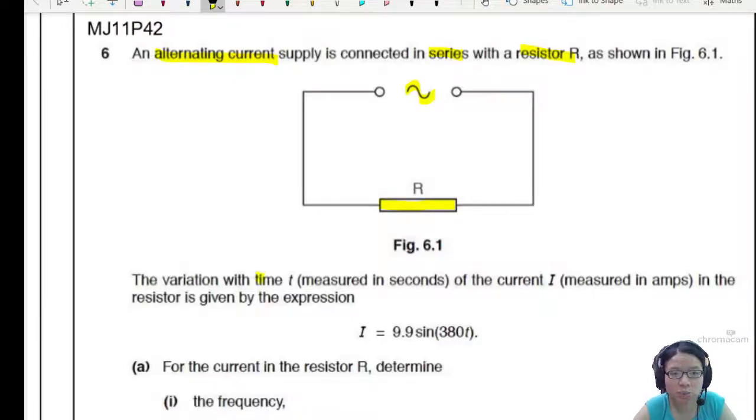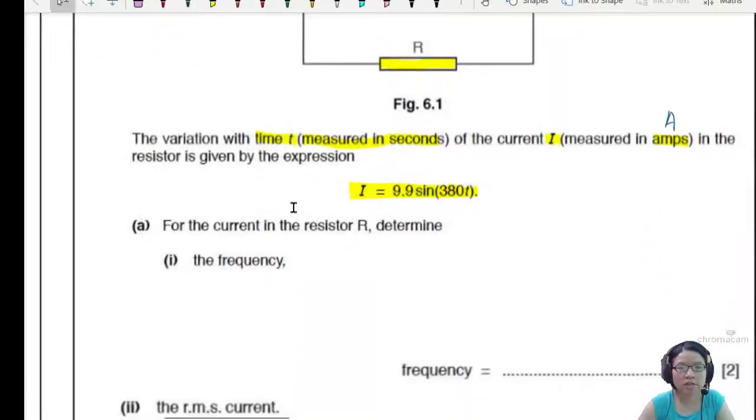The variation with time T measured in seconds of the current I measured in amps is given by this equation. So you should be able to recall the general equation of alternating currents. This one is I = 9.9 sin(380t). For the current in resistor R, determine the frequency.